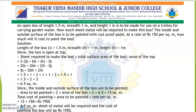Total surface area minus top area gives: LB + 2BH + 2LH. Substituting: 1.5×1 + 2×1×1 + 2×1.5×1 = 1.5 + 2 + 3 = 6.5 m².